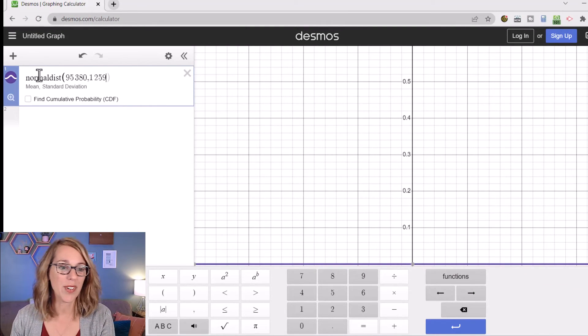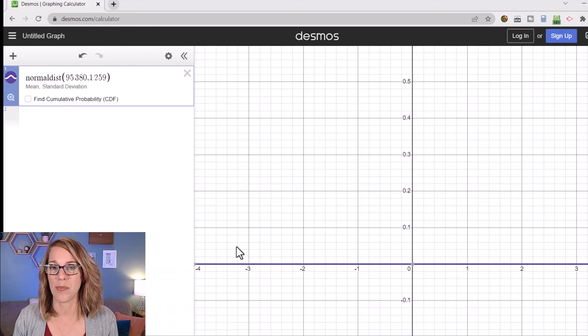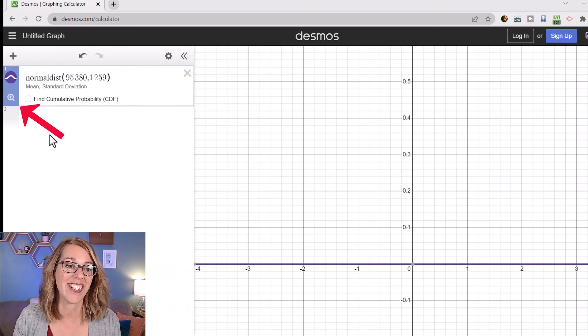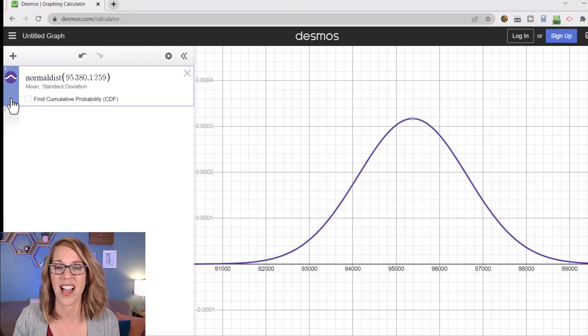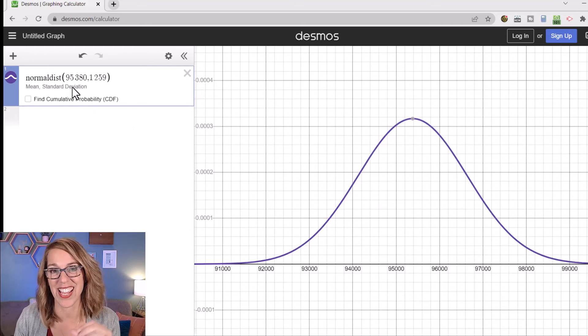Notice that my normal curve did not show up here. And that's because I need to click on zoom fit. So I'm going to click my magnifying glass. There's my normal curve. And you can see that the mean is now at the mean that I gave it.